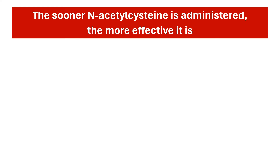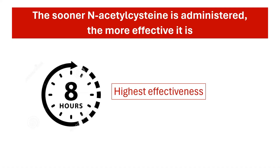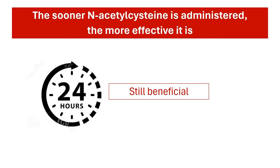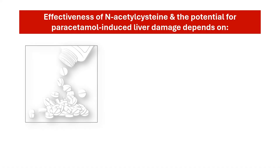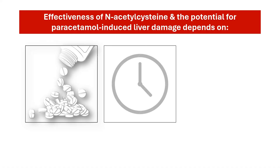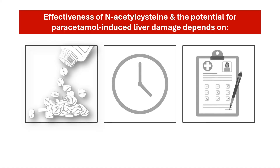The sooner it is administered following the overdose, the more effective it is at preventing liver damage. Its effectiveness is highest within the first 8 hours after ingestion, but it can still be beneficial even if administered up to 24 hours later. The amount of paracetamol ingested, the time since ingestion, and an individual's health status all play a role in determining the effectiveness of N-acetylcysteine and the potential for paracetamol-induced liver damage.